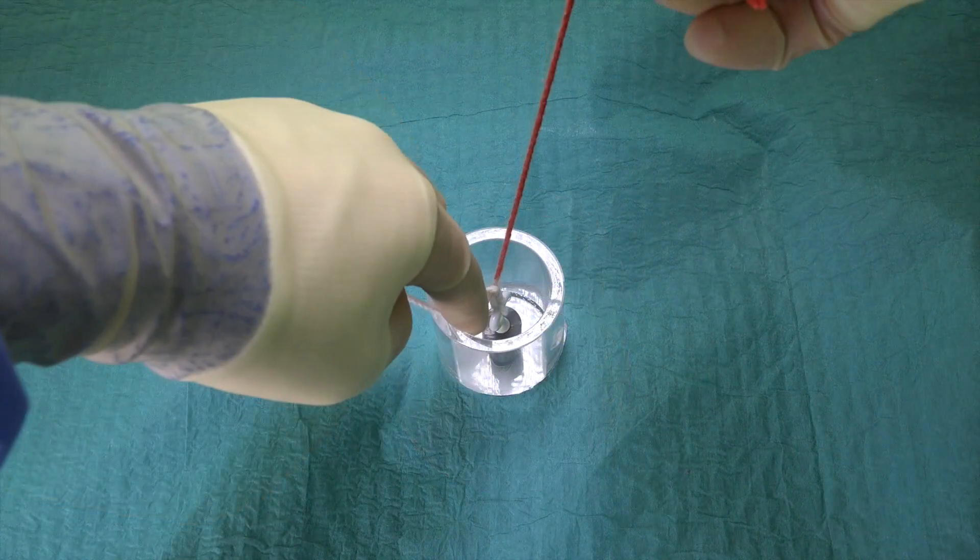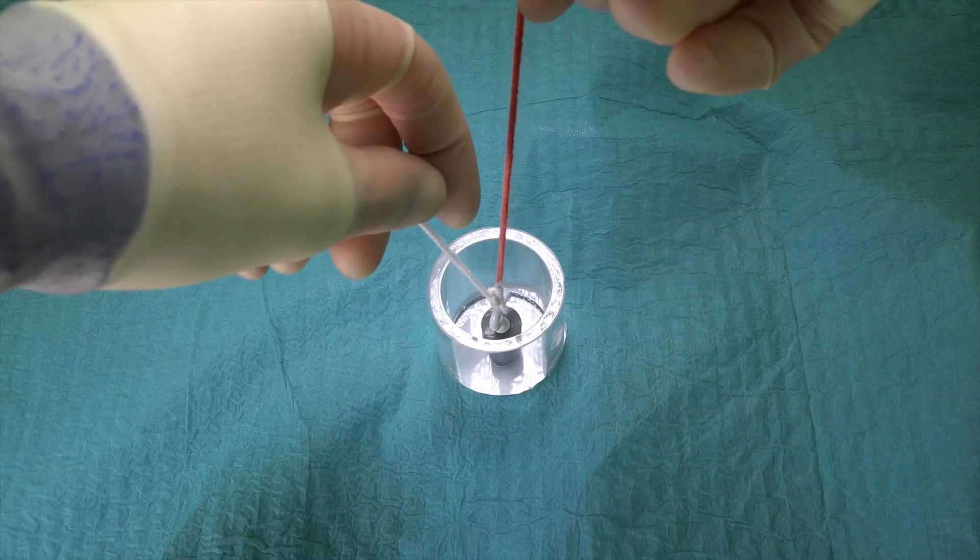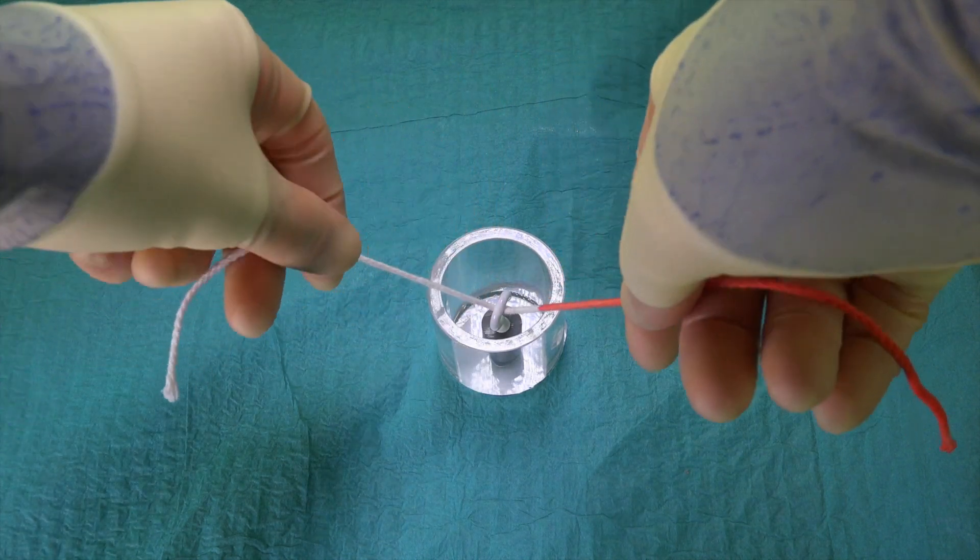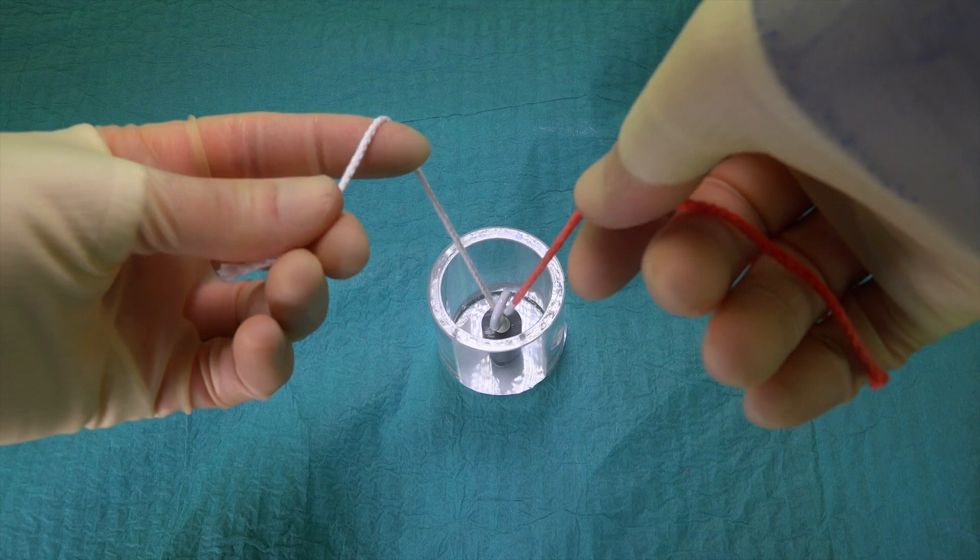Obviously, more throws will be required when using slippy monofilament sutures, as opposed to the more grippy braided sutures. So let's take another look at hand tying at depth with the left hand.